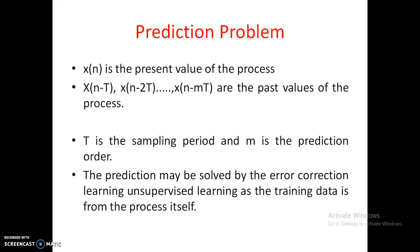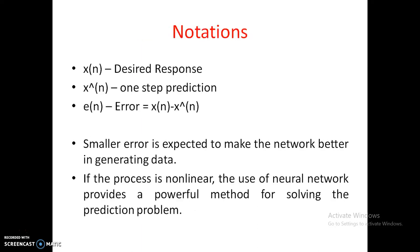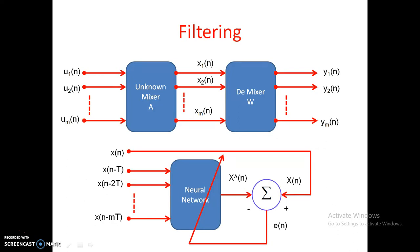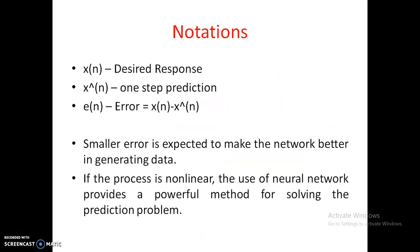The prediction may be solved by error correction learning in an unsupervised manner, as the training data is from the process itself. x(n) is the desired response, x̂(n) is the output of the neural network, and these two are compared to generate the error used to train the neural network. If the process is non-linear, the use of a neural network provides a powerful method for solving the prediction problem and generating the proper output.